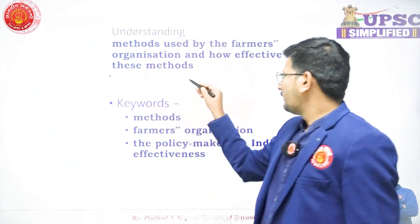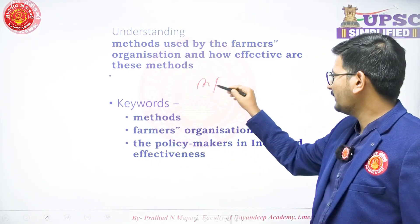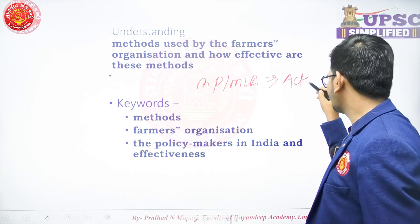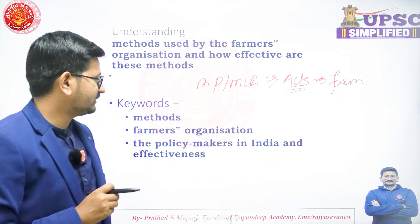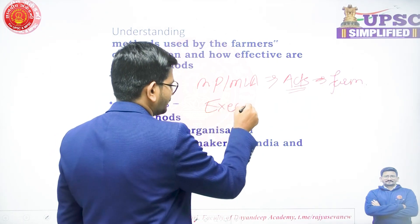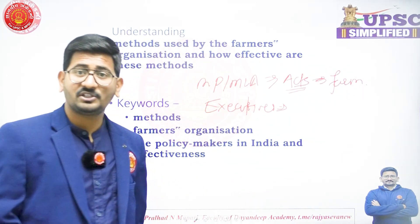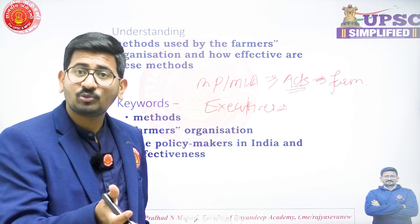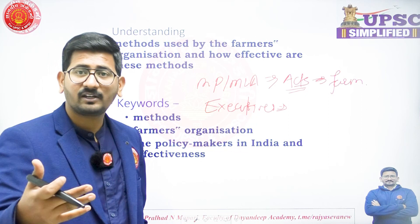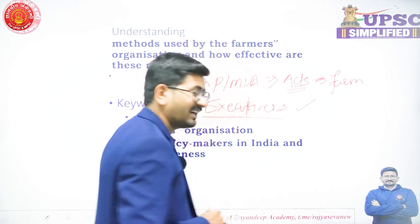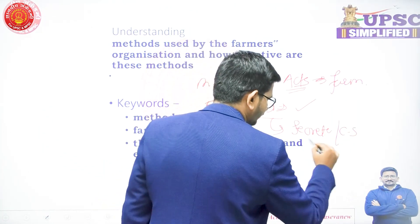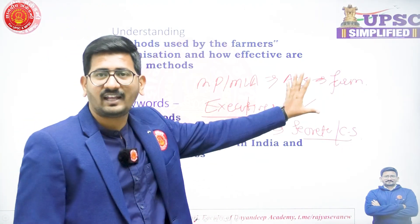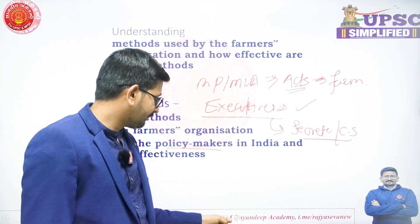For example, Members of Parliament and Members of Legislative Assembly create acts, including farm-related acts, thereby influencing agriculture policies. Another category is the executive — ministers such as the Agriculture Minister, Prime Minister, Commerce Minister, and even the Consumer Affairs Minister, since PDS policies directly affect agriculture and trade. The third domain is civil servants — secretaries — who actually maintain, make, and implement the policy.